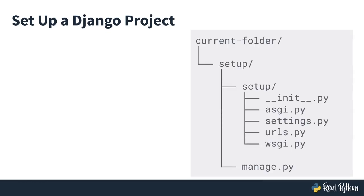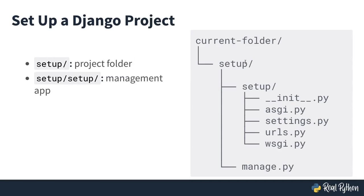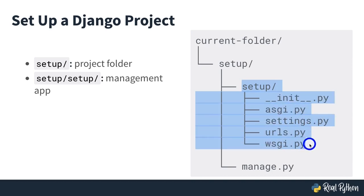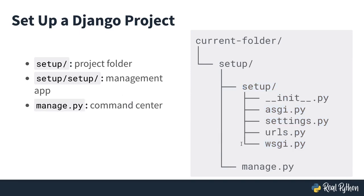So `setup` is the outer black square (the project), and the nested `setup` is the red management app. The nested `setup` folder is your management app and contains a couple of files you can check out. It also contains `manage.py`, which is the command center of your app — you will use this file quite often when interacting at the project level. For example, when doing tasks involving the database or creating a superuser, this is where those commands live.